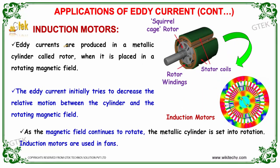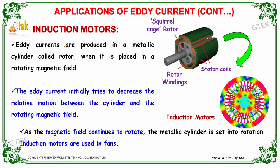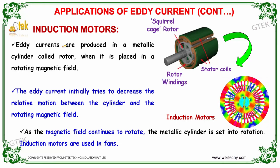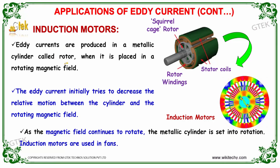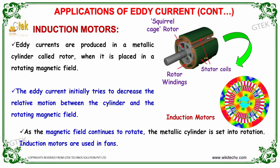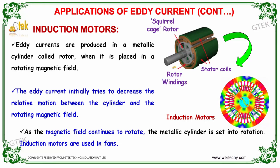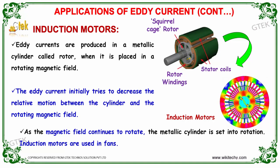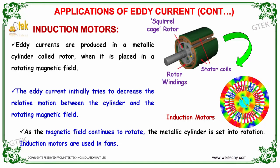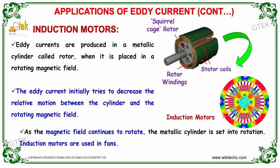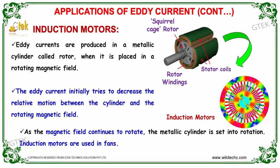The next important application of eddy current is the induction motor. Eddy currents are produced in a metallic cylinder called the rotor. When it is placed in a rotating magnetic field, the eddy current initially tries to decrease the relative motion between the cylinder and the rotating magnetic field. As the magnetic field continues to rotate, the metallic cylinder is set into rotation. These kinds of induction motors are used in fans.